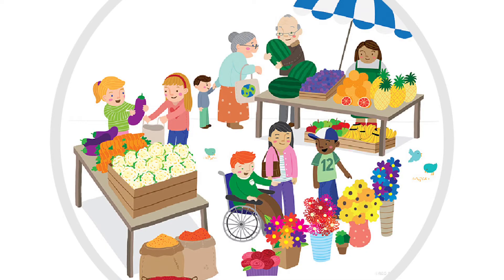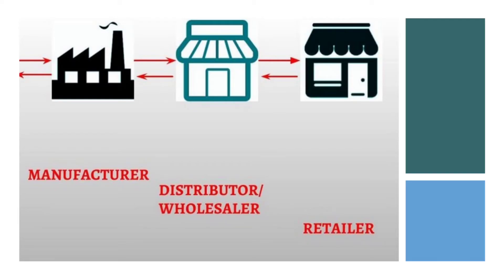In profit and loss, let us see when we need anything in our daily routine, we go to the market, where shopkeepers sell lots of articles like fruits, vegetables, clothes, groceries, medicines, etc. Shopkeepers buy these articles or goods either directly from a manufacturer or through a wholesaler.